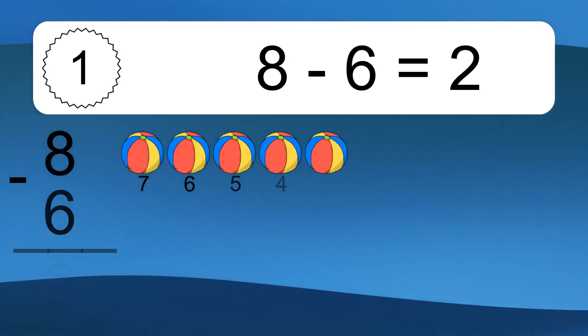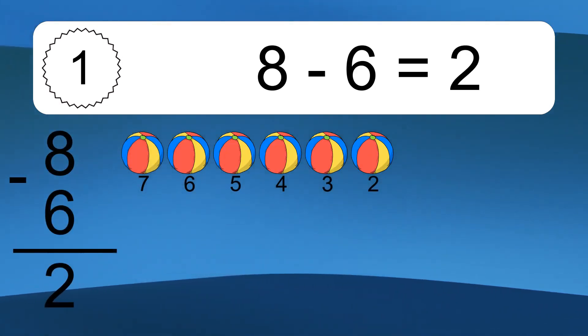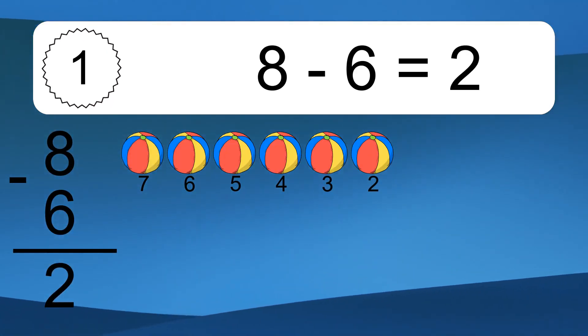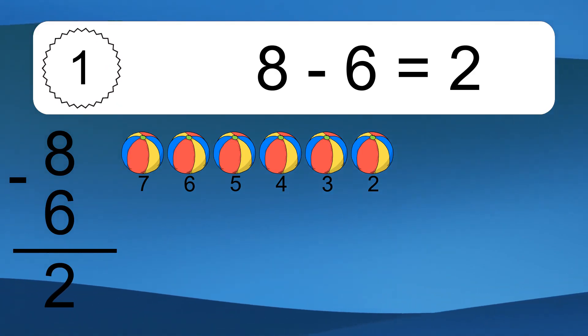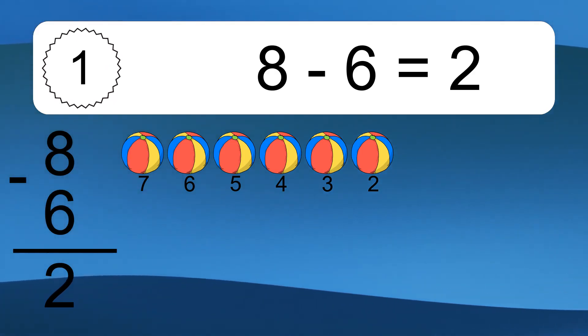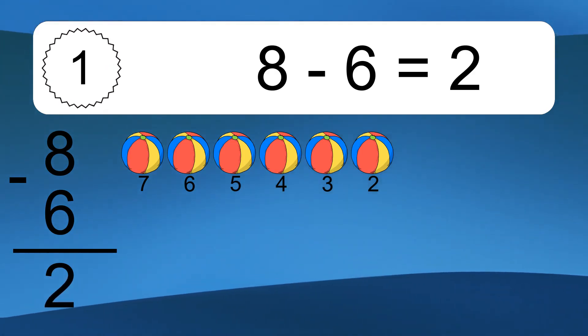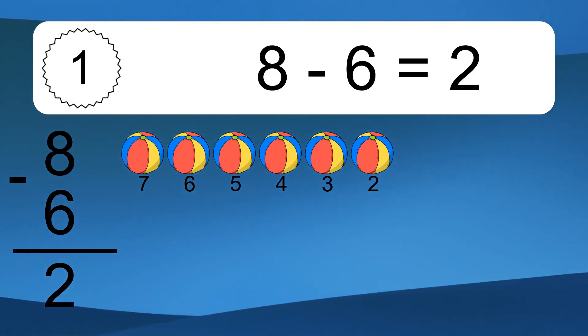8 minus 6 equals 2. Let's count it: 7, 6, 5, 4, 3, 2.